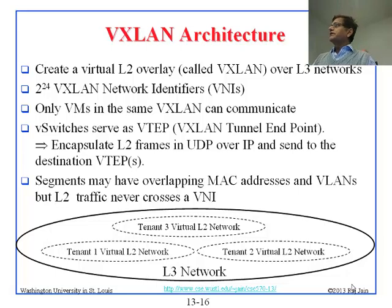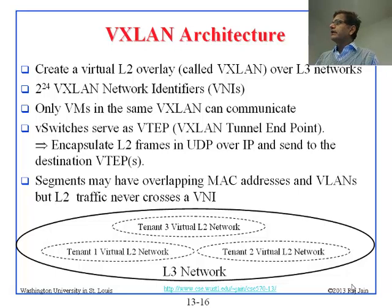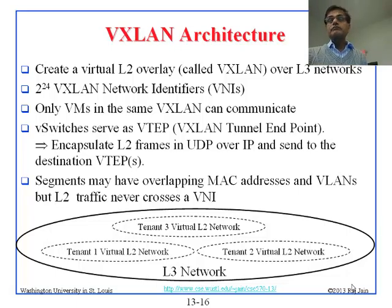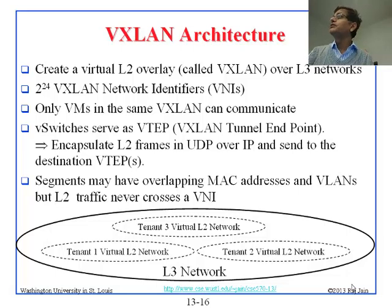Much of this might feel repetitive, but you have this L3 network which you want to divide into multiple tenant networks, and they want to do 2 raised to 24 VNIs. VNIs are like VLANs — virtual networks. So they want to do 2^24, and on top of these you could also do your VLANs, which were 12 bits. So 2^12 there, but these many identifiers are available for the provider.